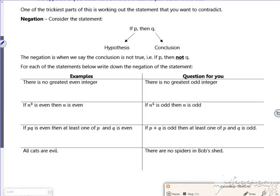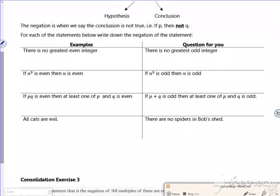Right then. So it says here, there is no greatest even integer. So our opposite of that is there is a greatest even integer. There's one there for you to do, there's no greatest odd integer, so there is a greatest odd integer. If n cubed is even, then n is odd, is even.